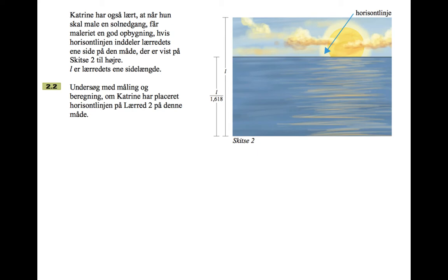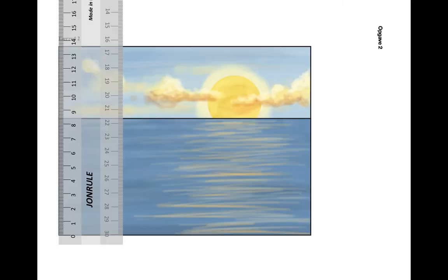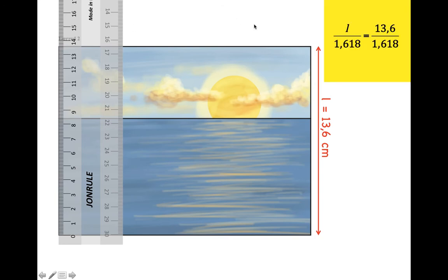It says investigate with measurement and calculation whether Katrina has placed the horizon line on canvas two in the right way. So there's canvas two, and if we measure it, now this depends on the size that your exam question is, because it gets photocopied to different sizes. But on my one, I measured it and it was 13.6 centimeters. So L was 13.6 centimeters. So if we then work out L divided by 1.618, 13.6 divided by 1.618, we get about 8.4. So that means that from the bottom up to the horizon line should be about 8.4. And indeed, you can see it is.